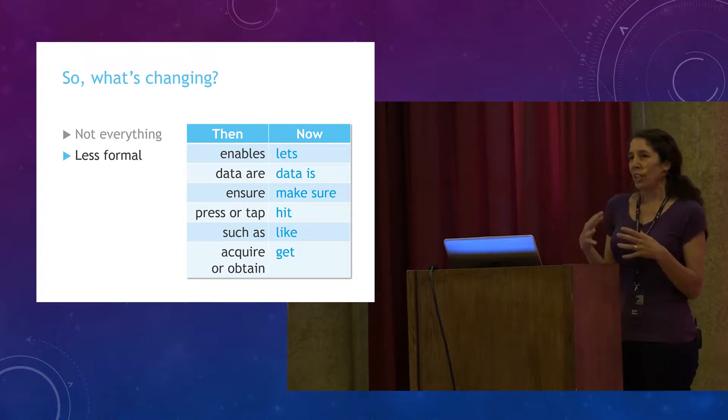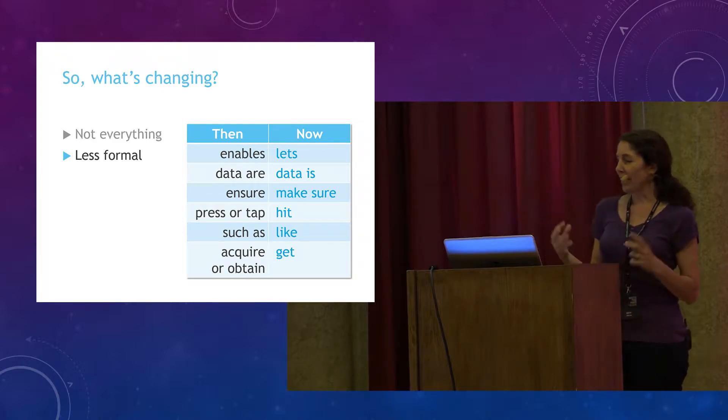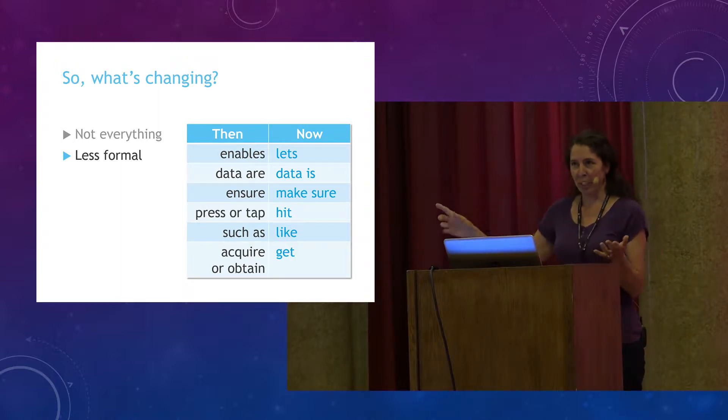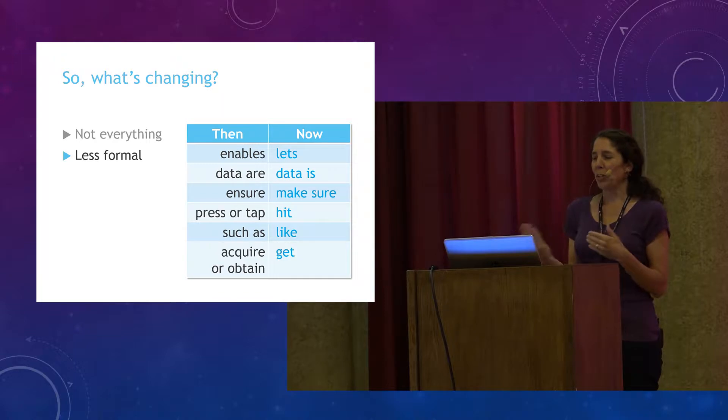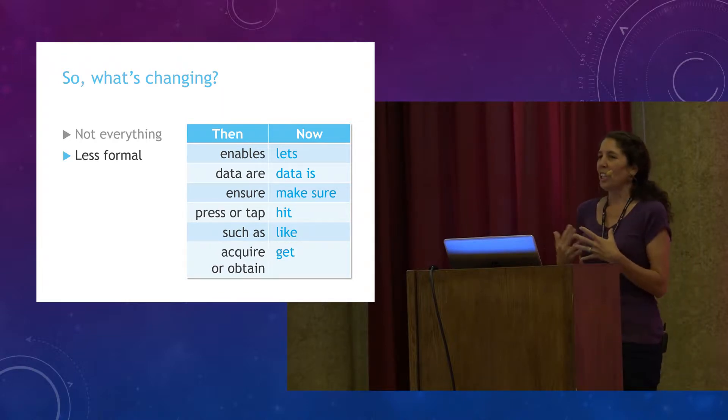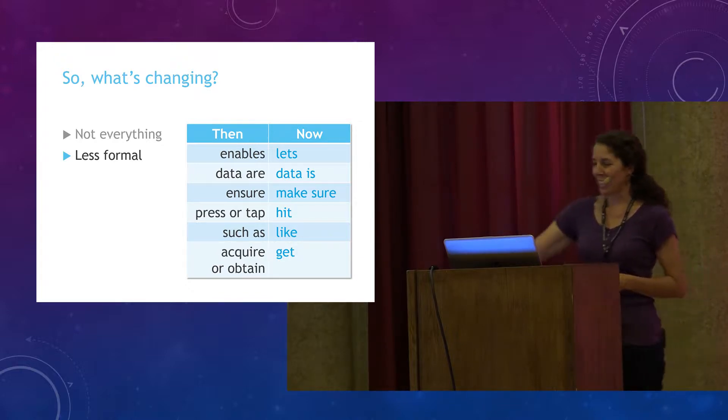For example, we used to say enables all the time. Now I'm seeing a lot more lets, as in this product lets you rule the world. And instead of press or tap when we got the touch screens coming on board, I've been seeing more hit, as in hit okay or hit enter. And the word hit used to be taboo for us writers for so long because of the literal meaning, but writers are starting to embrace it and perhaps that's because its ambiguity works for multiple interfaces. Hit me up after this talk and I'll be happy to discuss that further.